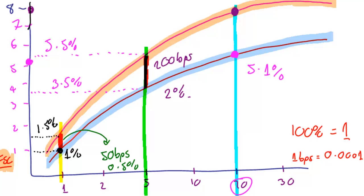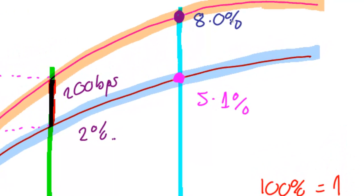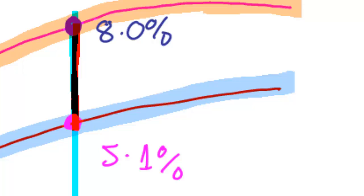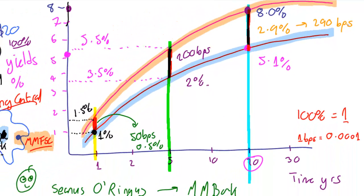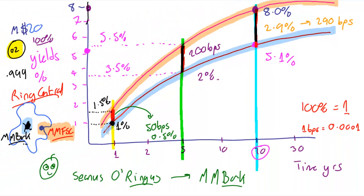That gets to about there. I have to extend this yield frame here, and that's going to be about 8%. So what we have at the outer edge now is we have a spread, a credit spread of, quickly using my incredible brain, 2.9% or 290 basis points.